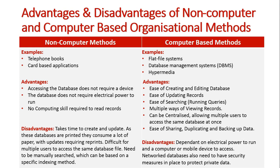The disadvantages of computer-based methods: they are dependent on electric power to run, and you also need a device to access them. If electricity is out, the system will likely be inaccessible. Network databases also need to be updated with security measures. Because they're on a network — potentially the internet — they are prone to hackers attempting to access these databases. We need to protect the private data stored in our records, which could include personal information, bank details, and a whole variety of sensitive data.